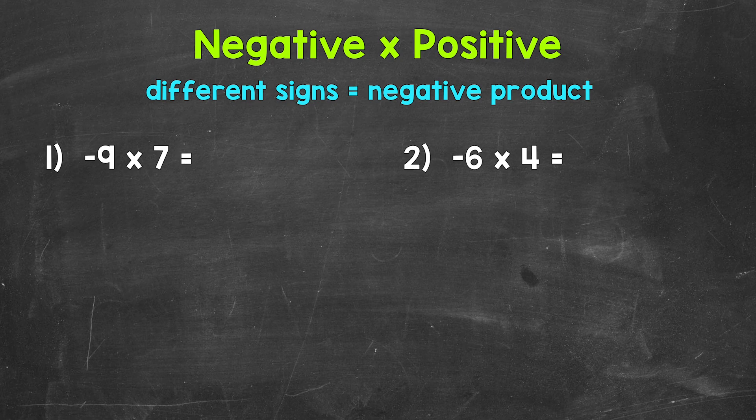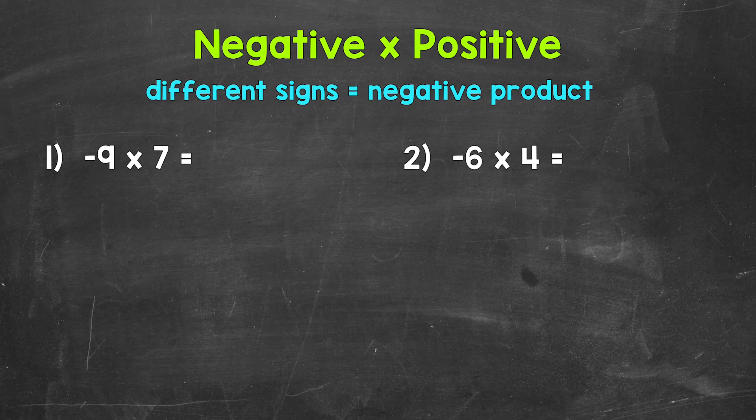Let's think of this as 9 times 7, which is 63. So we have 63, and this is going to be negative again because we have different signs. So our final answer, negative 63.